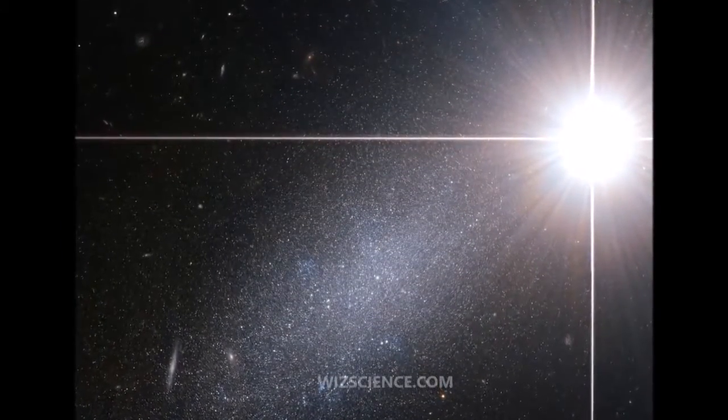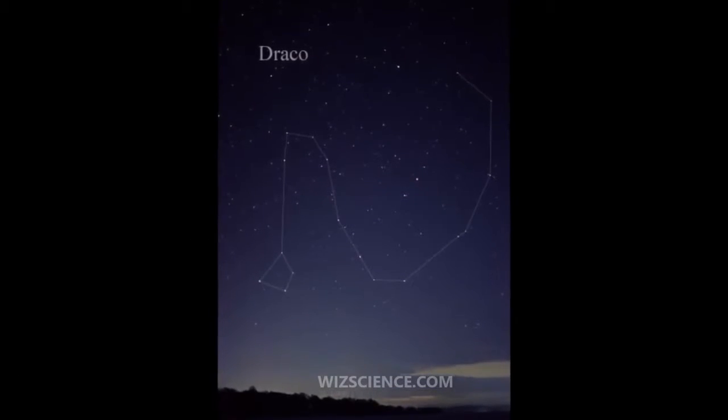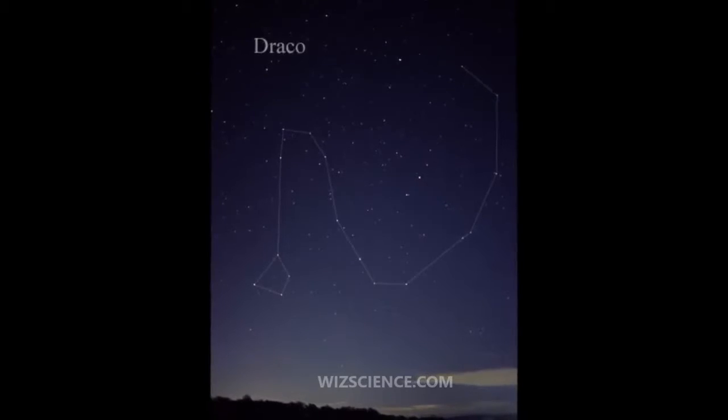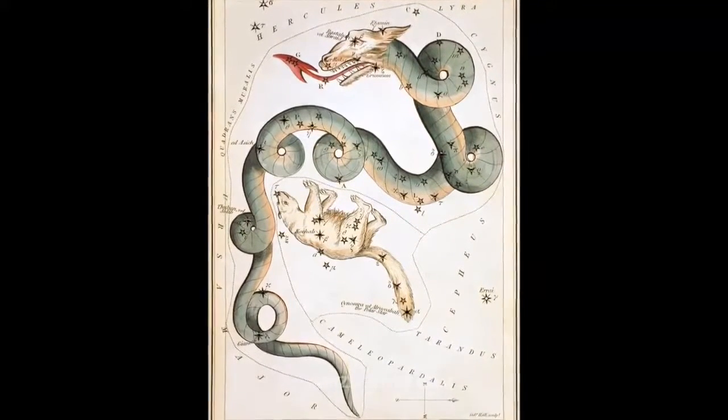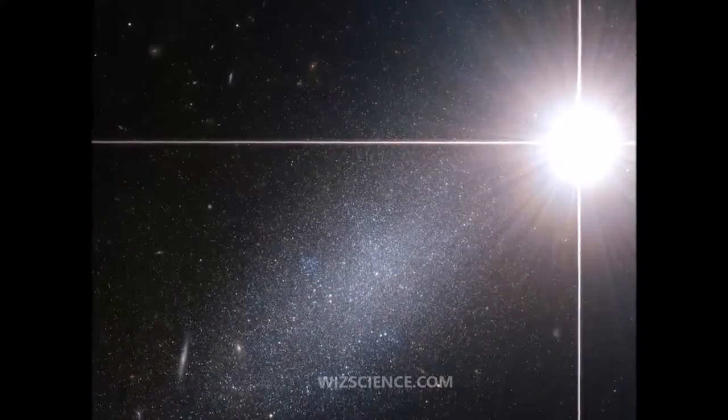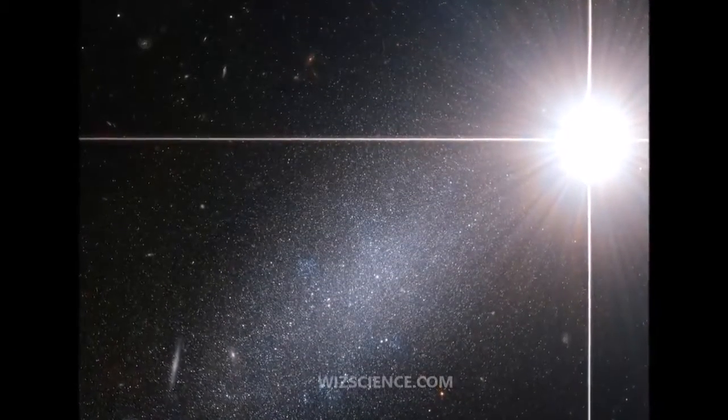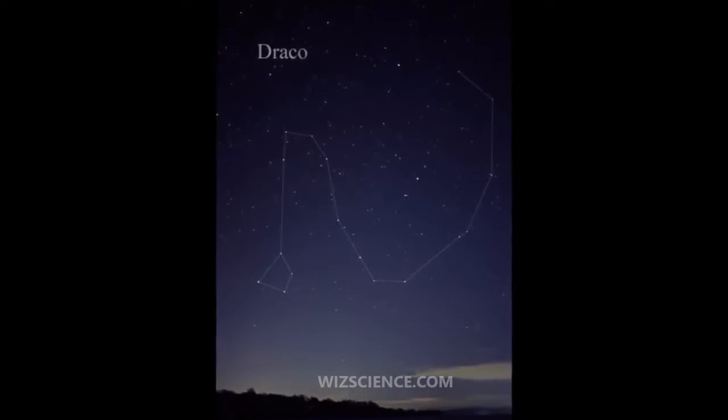20 Draconis is a binary star with a white-hued primary of magnitude 7.1 and a yellow-hued secondary of magnitude 7.3 located east-northeast of the primary. The two are separated by 1.2 arc-seconds at their maximum and have an orbital period of 420 years. As of 2012, the two components are approaching their maximum separation.